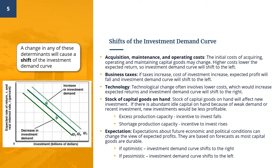Fifth, expectations: most capital goods are durable in that they last for a long time. Thus, expectations about future economic and political conditions, both in the aggregate and in certain specific markets, can change the view of expected profits. They are based on forecasts of business conditions such as changes in political climate, population growth, and consumer tastes. If businesses become optimistic about future sales, costs, and profits, the investment demand curve will shift to the right. In contrast, a pessimistic business outlook will shift the investment demand curve to the left.